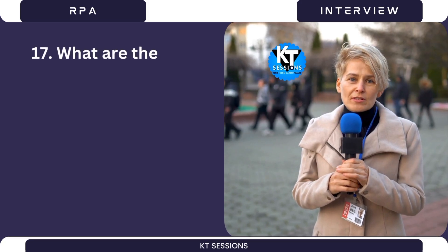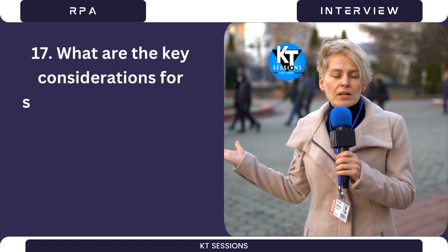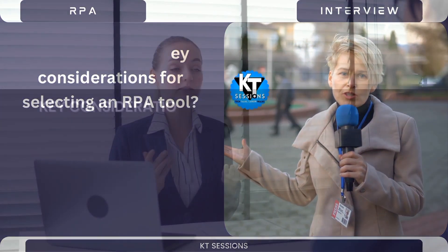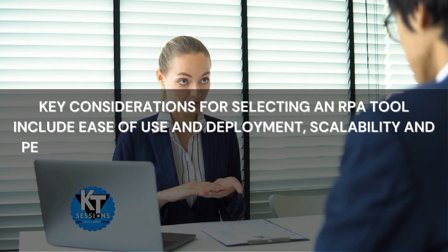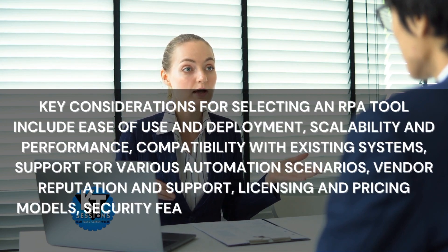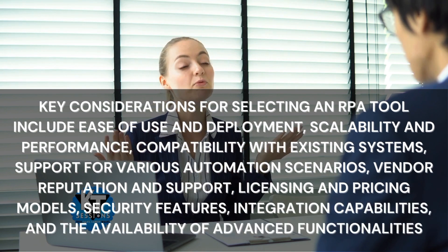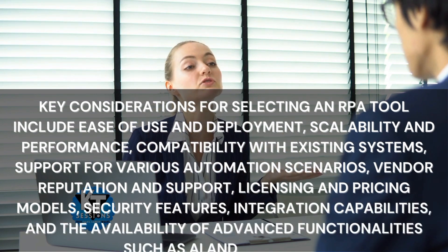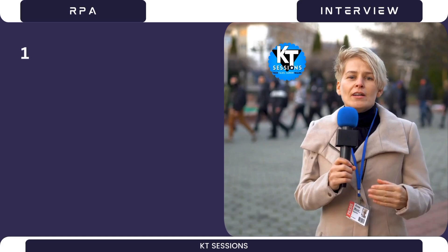Question 17: What are the key considerations for selecting an RPA tool? Key considerations include ease of use and deployment, scalability and performance, compatibility with existing systems, support for various automation scenarios, vendor reputation and support, licensing and pricing models, security features, integration capabilities, and the availability of advanced functionalities such as AI and analytics.